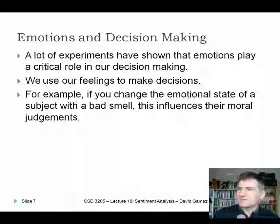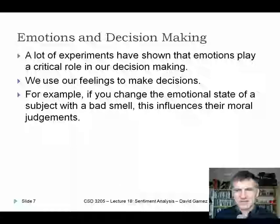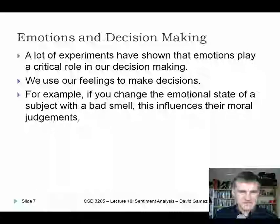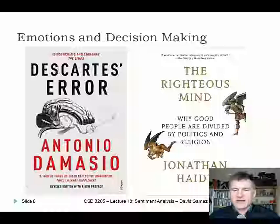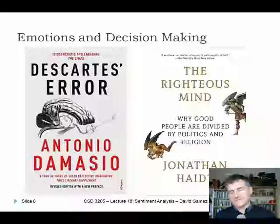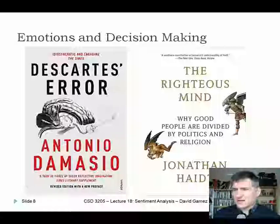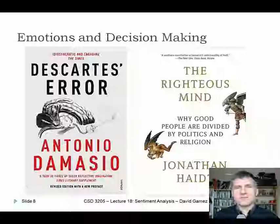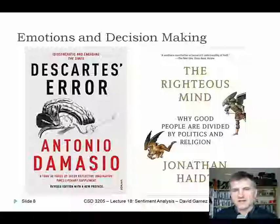There's scientific research showing that if you manipulate people's emotional state — for example, by exposing them to a bad smell — you can change their moral judgment. Anecdotal stories also suggest you can sell more cars if you give people comfortable seats during the pitch, because you're putting their body into a positive emotional state. I've built AI models that incorporate sentiment and emotions, and if you want to build systems that think like humans, they'll probably need to use emotions in their architecture.